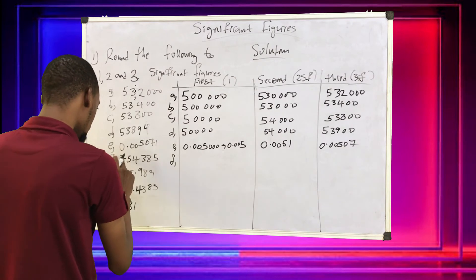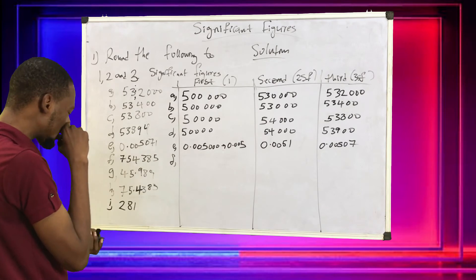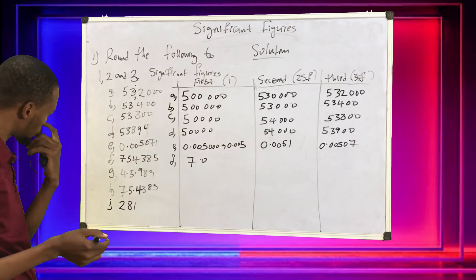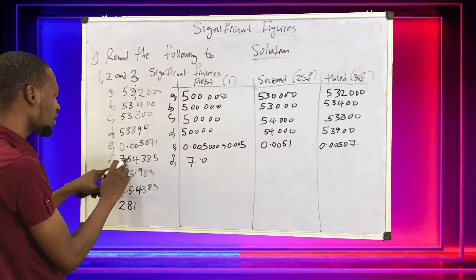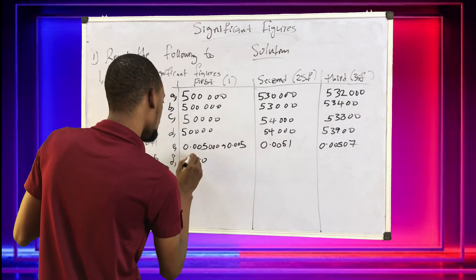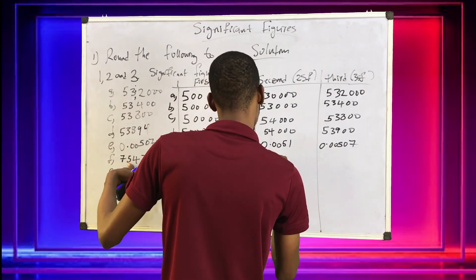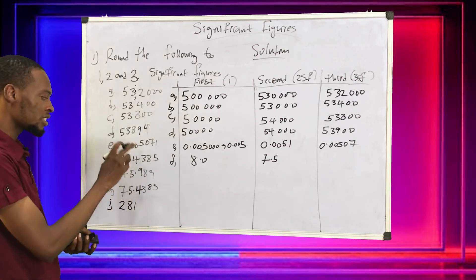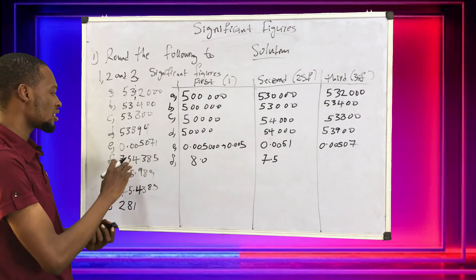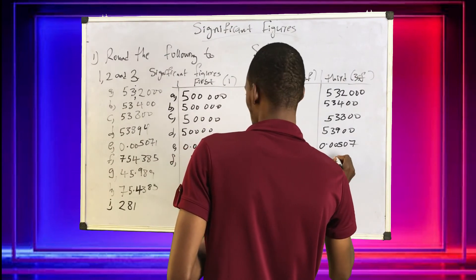F: this is a decimal number. For one significant figure: it's just 7 or 7.0. But since the next digit is 5, we approximate — add 1 to this one, giving 8. For two significant figures: this gives you 7.5, because 5 is the digit after the first significant figure, making it the second significant figure. For three significant figures: this gives 7.54.